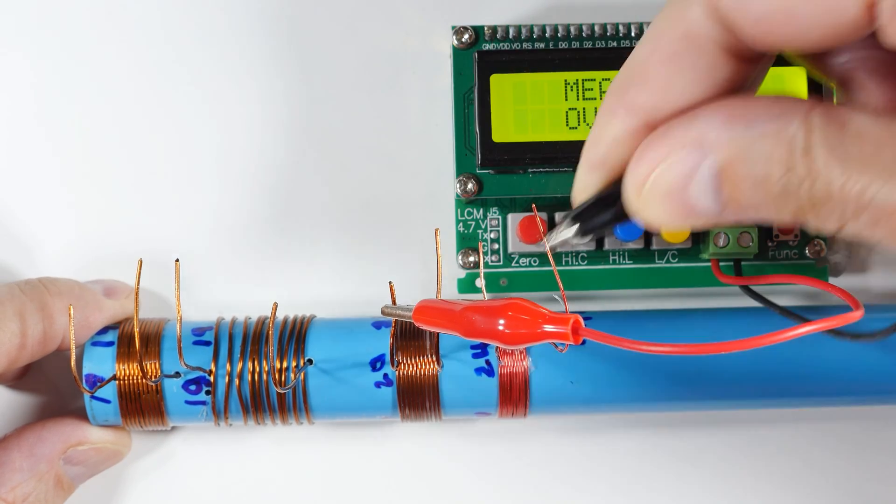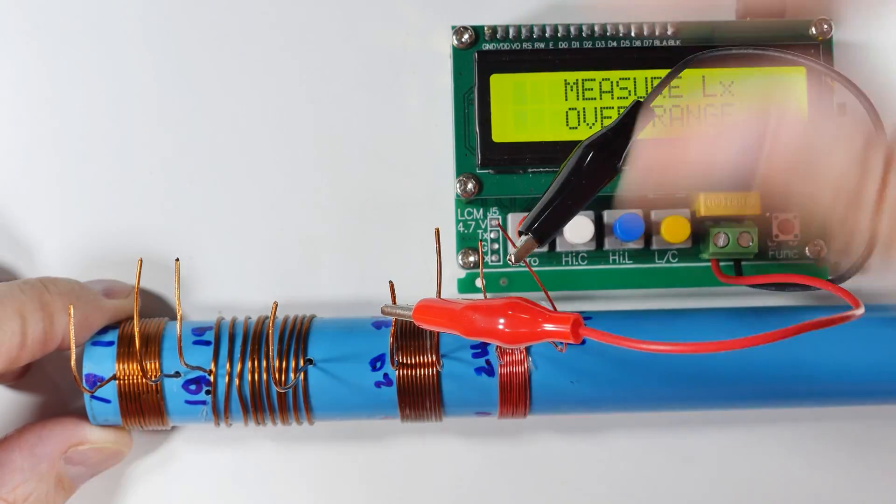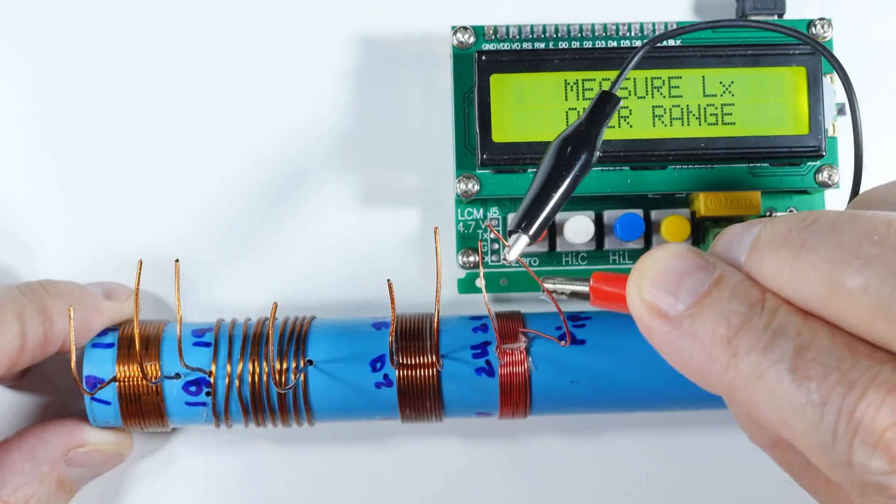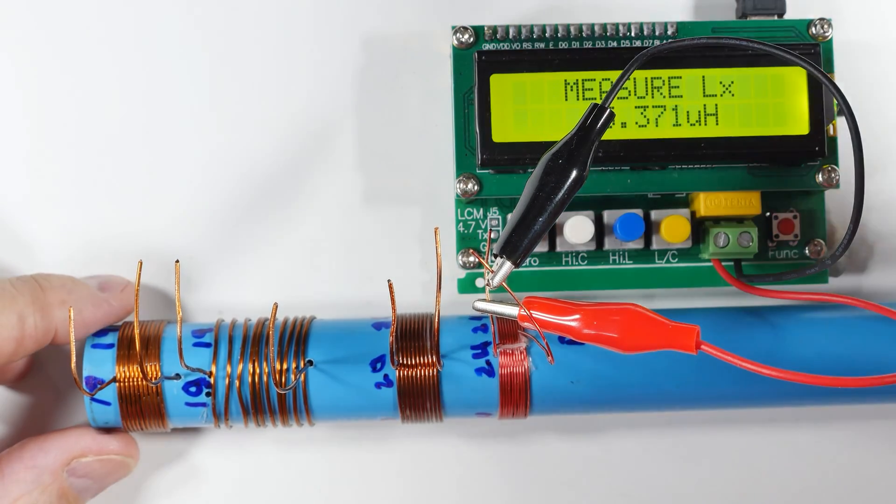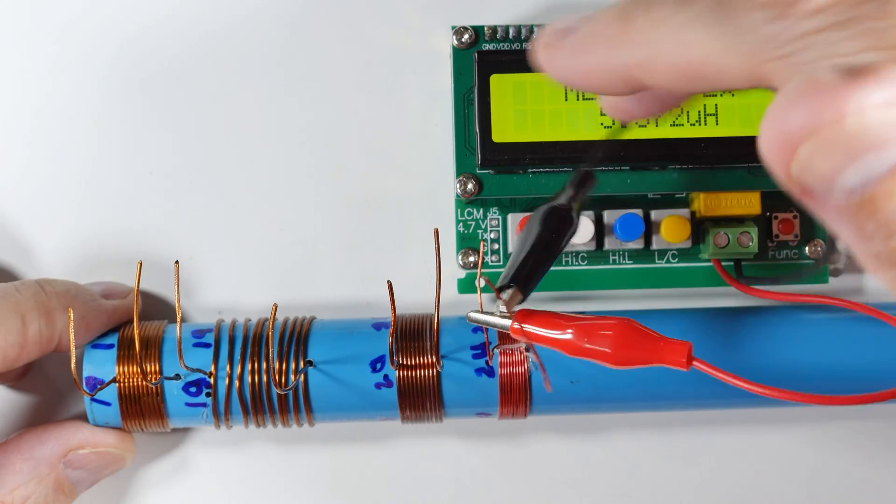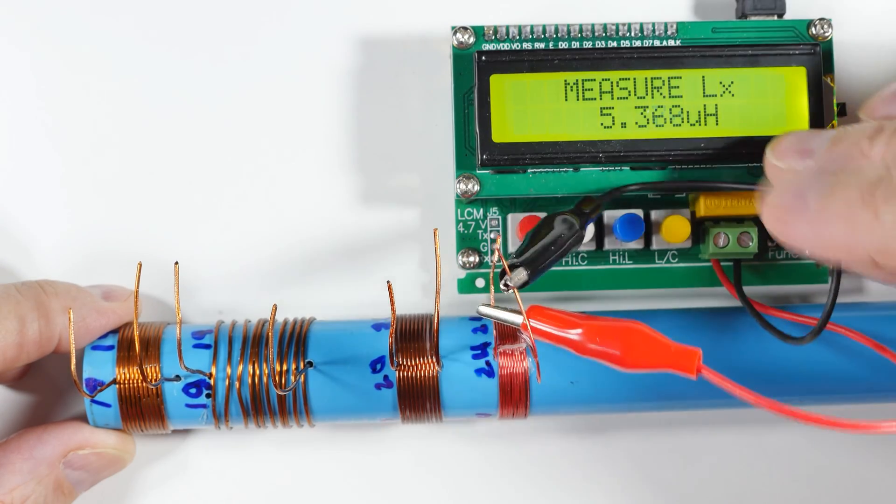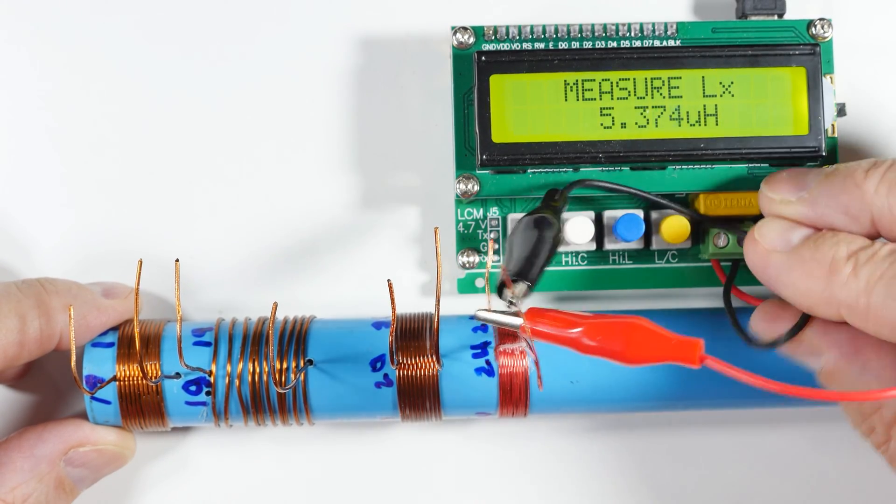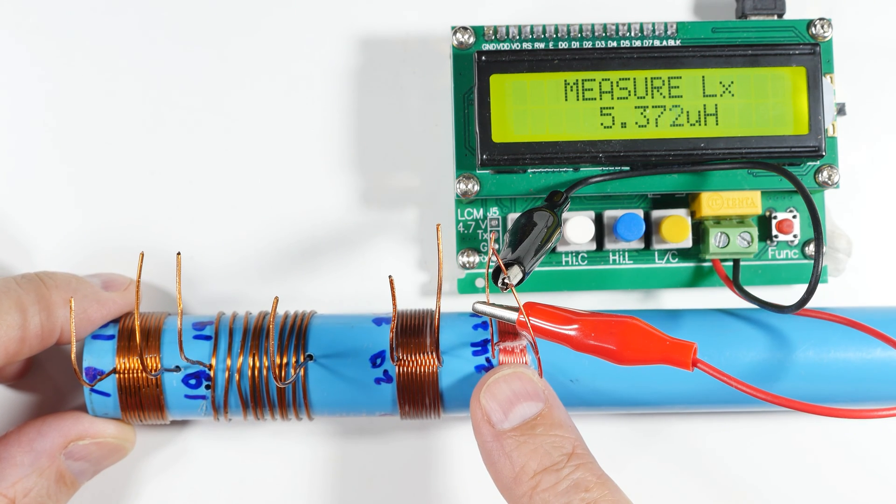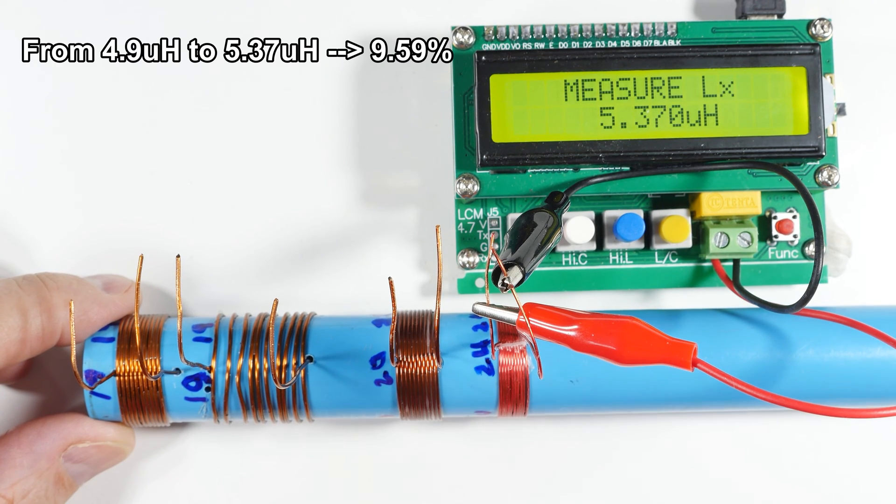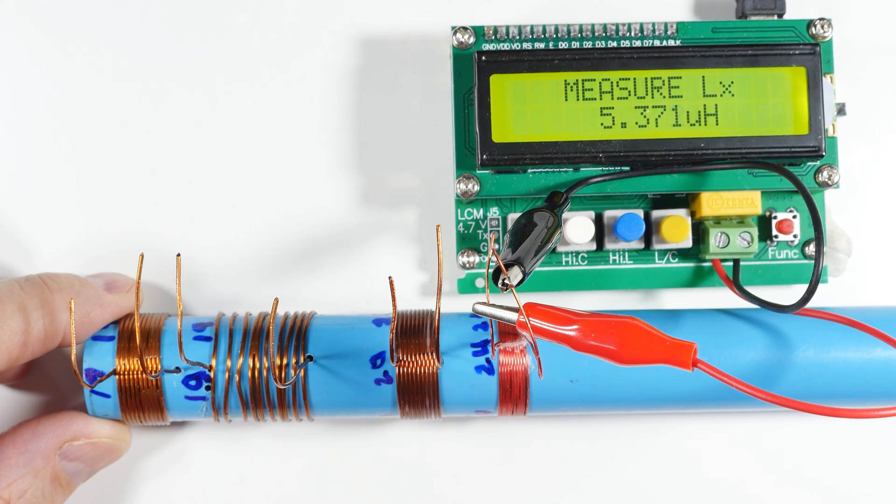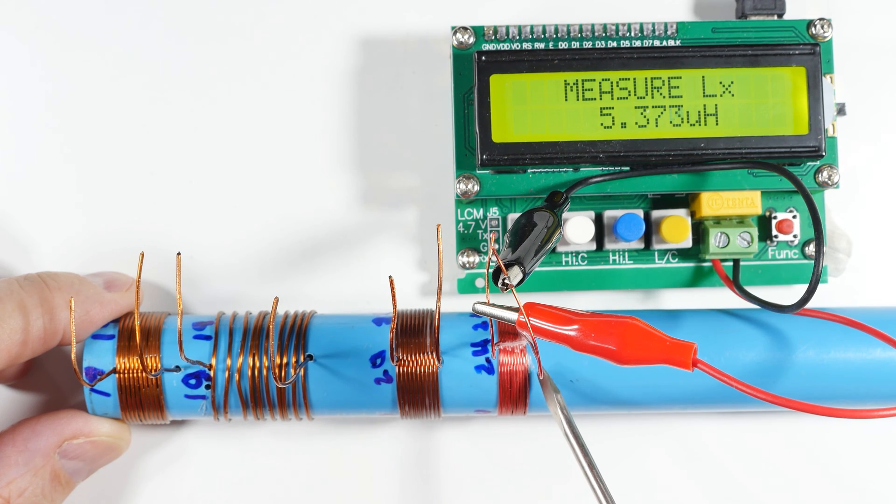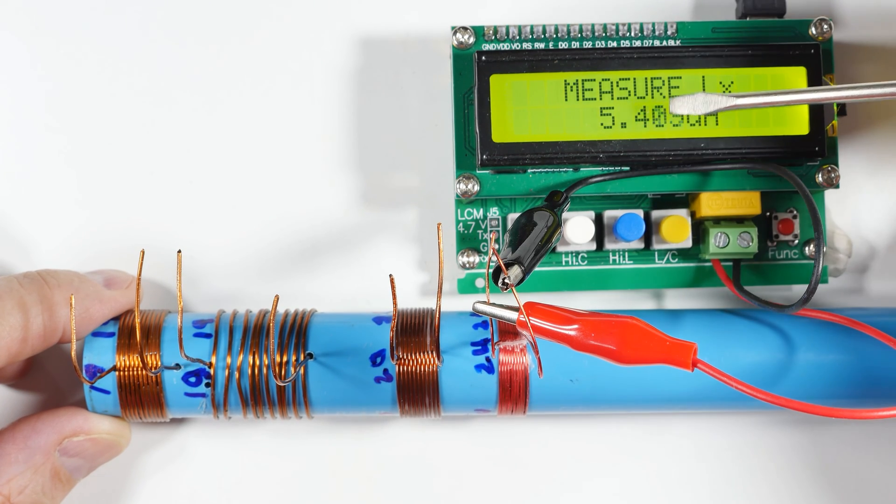And then the last one is a 24 gauge tightly wound, and we'll see how that one does. I got this clip in the way... Okay, so we went up by quite a bit. This is 5.37. So you can see that the more compact the coils are, in other words if you get more turns per unit, so more turns per centimeter, your inductance goes up.